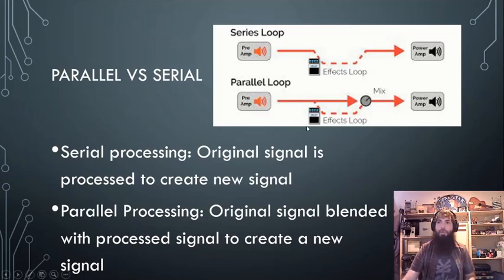Parallel, we're going to go from the source, it's going to go to some sort of split, where we're going to split the signal to go to some sort of blend knob, where we can then blend the affected signal with our non-affected signal. And so that way, out of the output is our new blended signal.